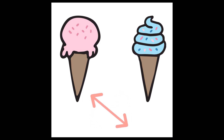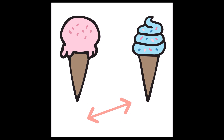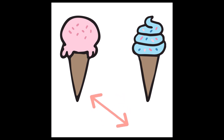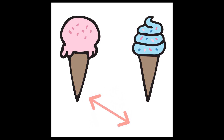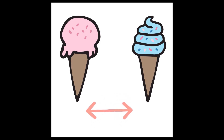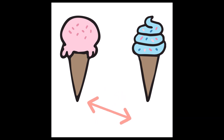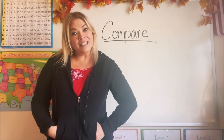What's one thing that's the same? Do you see something they both have that is the same? I bet you guessed it — it's the cone, isn't it? They both have a brown cone. Good job comparing these ice cream cones!